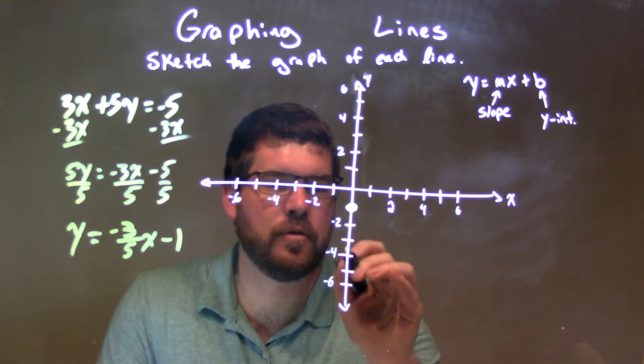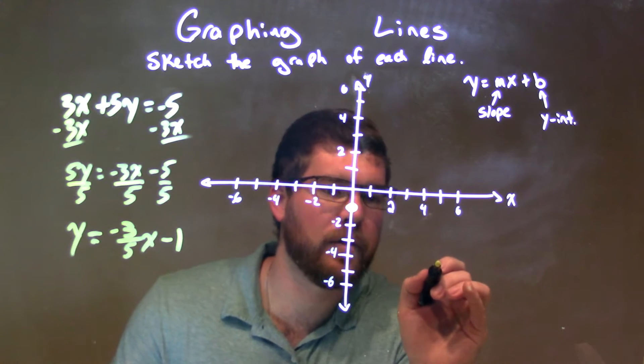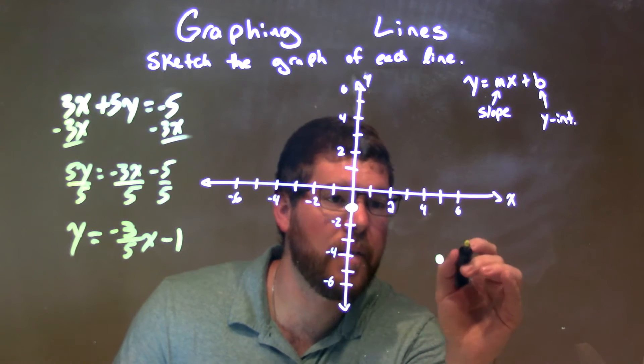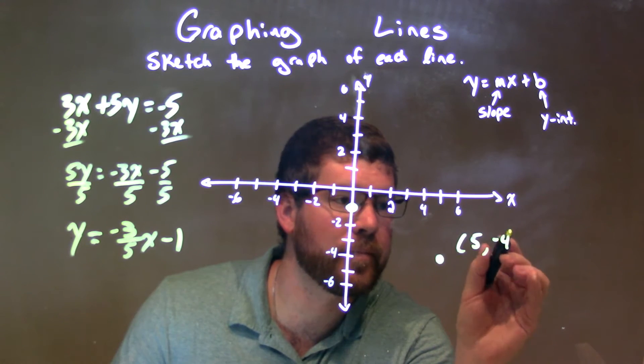So we're going to go down 3: 1, 2, 3, over 5: 1, 2, 3, 4, 5. So we've got a dot right here. And that coordinate point right here is (5, negative 4).